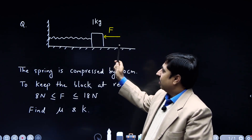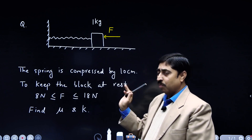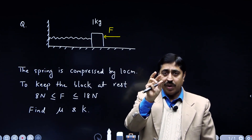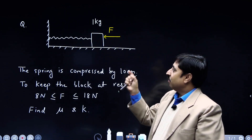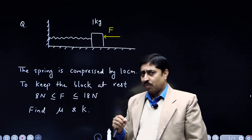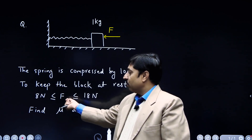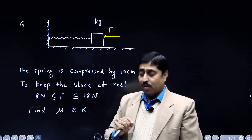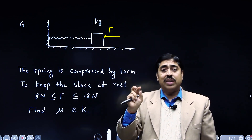In this diagram, the spring is compressed by 10 centimeter. A horizontal force F is being applied on this block so as to keep it at rest. Mass of the block is 1 kilogram. It was observed that when the value of force is anywhere from 8 Newton to 18 Newton — it could be 8.1, 17.2, or 10 Newton — the block stays at rest.